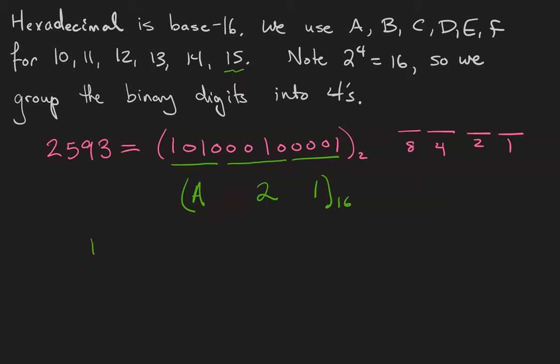Check for yourself that if you do 10 × 16² + 2 × 16 + 1, you will get back 2,593.